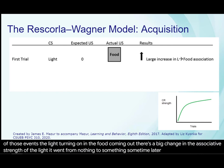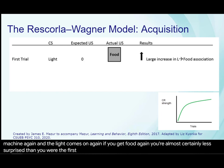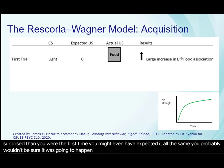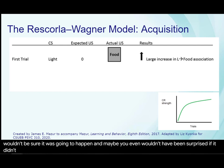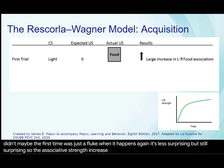Sometime later, you walk up to the machine again and the light comes on again. If you get food again, you're almost certainly less surprised than you were the first time — you might even have expected it. All the same, you probably wouldn't be sure it was going to happen, and maybe you wouldn't have been surprised if it didn't. Maybe the first time was just a fluke. When it happens again, it's less surprising, but still surprising, so the associative strength increases again, but not as much.